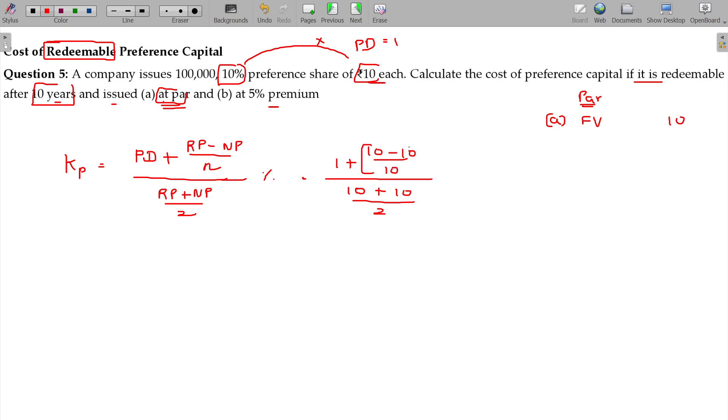This will have no meaning at all, you will get 10 percent. Second scenario is issued at premium, repayment is 10.5.